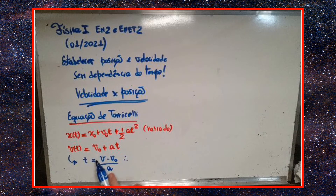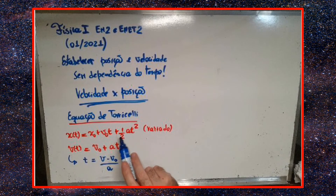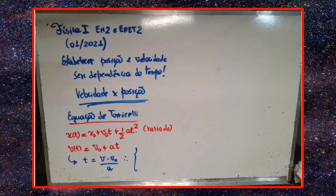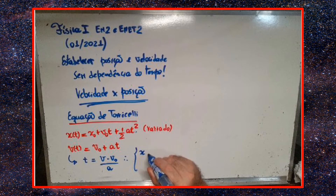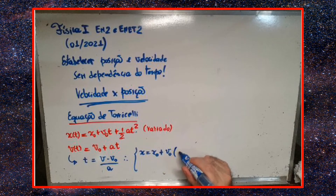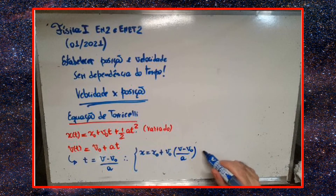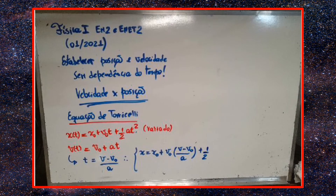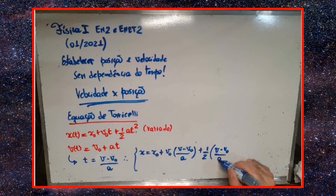Vou substituir esse t na expressão da posição. Isso vai gerar o seguinte: x igual a x₀ mais v₀ que multiplica (v − v₀) sobre a, mais 1/2 de (v − v₀) sobre a, ao quadrado.